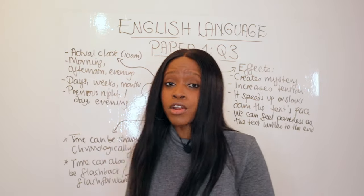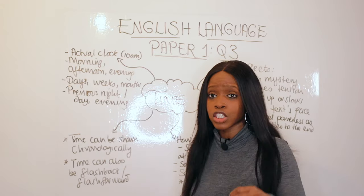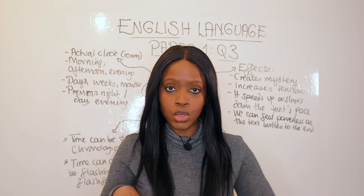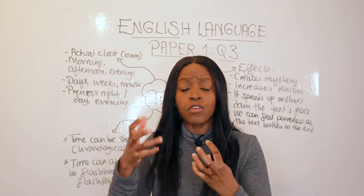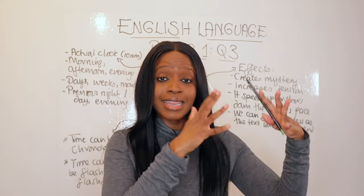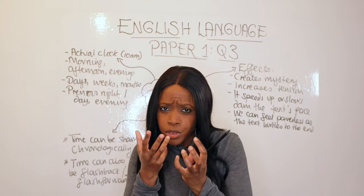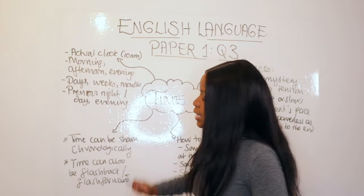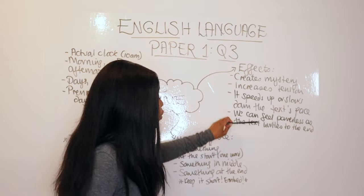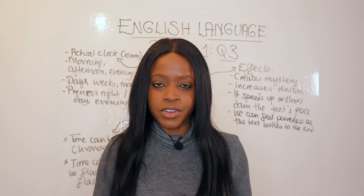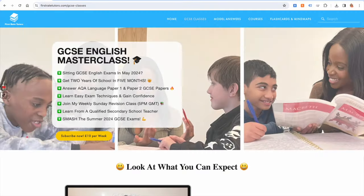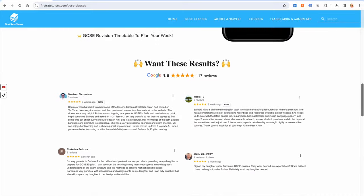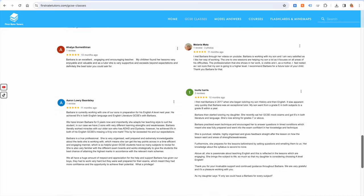So guys, time being used as a structural feature is such a powerful technique to look out for, and if you can tie it to flashback and flash-forward that's a double whammy for your examiners and teachers when answering question three of language paper one. Try, especially in the coming months, to spot instances of this in different inserts and comment on its effects. And don't forget — from this Sunday at 5 p.m. all the way until the final GCSE exams in May, I'll be running weekly English language paper one and paper two masterclasses, so make sure you sign up.